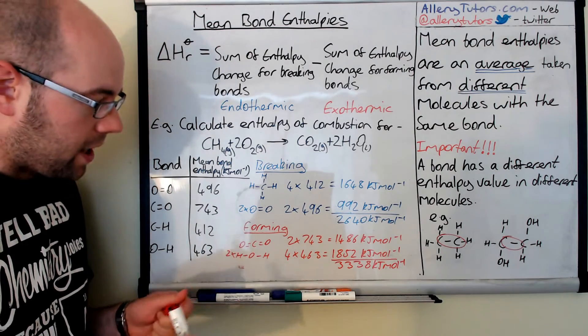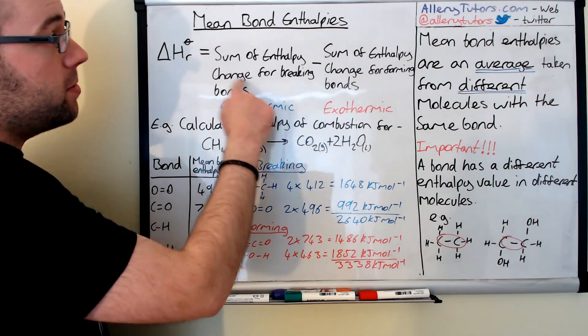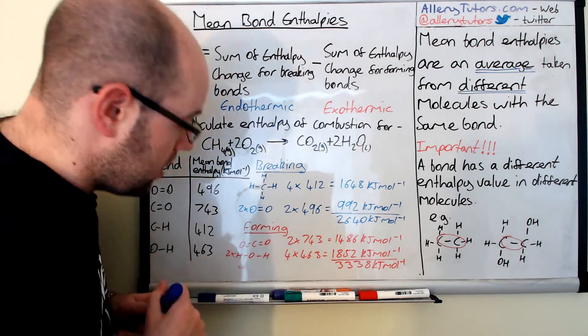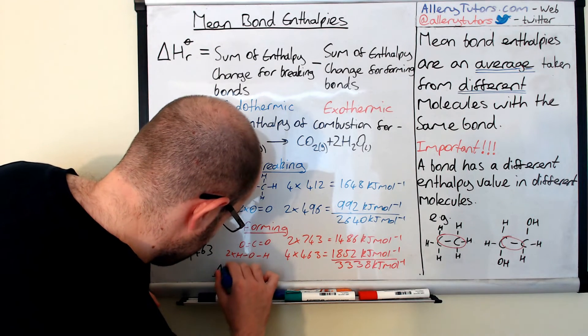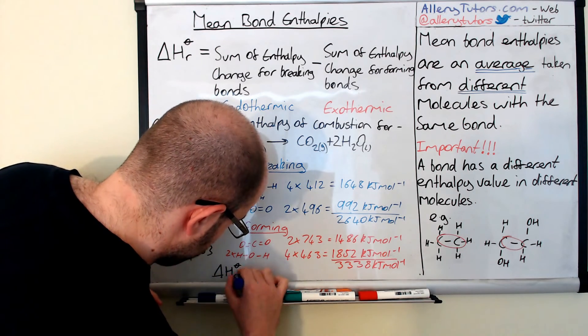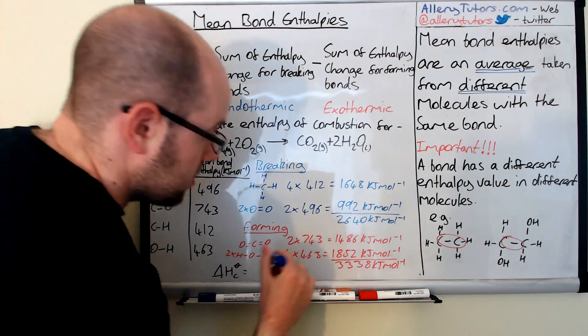The final step is to put our numbers in. So the sum of enthalpy change for breaking bonds we said was... this is going to be the enthalpy change of combustion because this is the reaction that we're doing. So this is 2640.